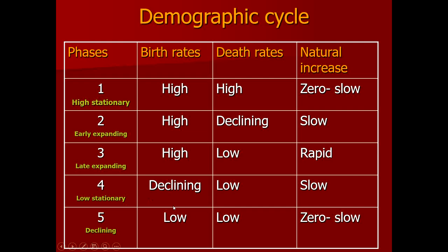Stage four is the low stationary phase — birth rates are declining, death rates are also declining, and the population is growing slowly as both rates compensate each other. The fifth stage is the declining phase, where the population goes into negative balance because birth rates are really low and not even reaching replacement level. Death rates are low and the population goes into zero or negative balance.